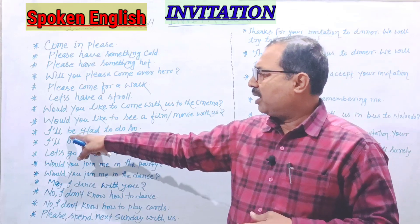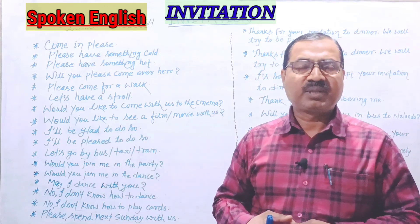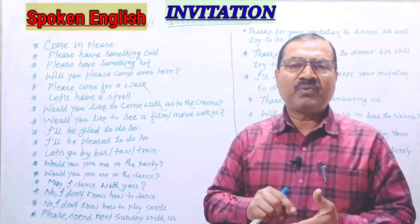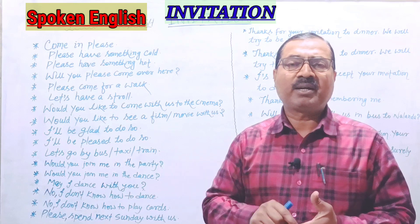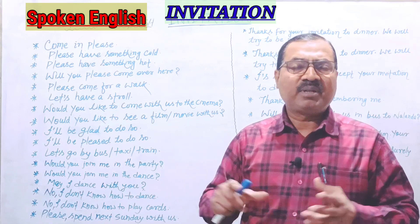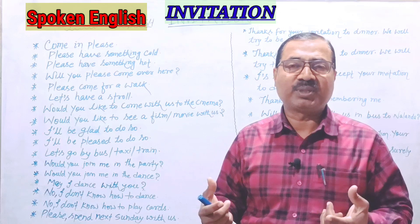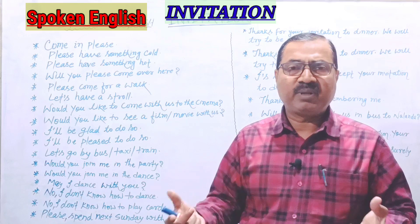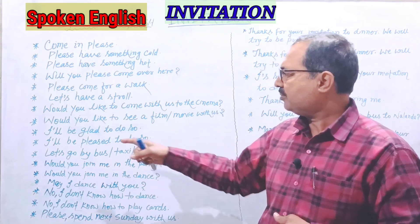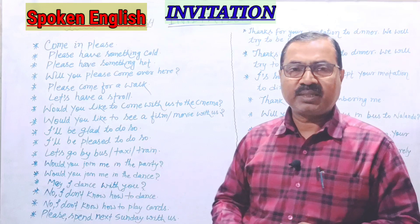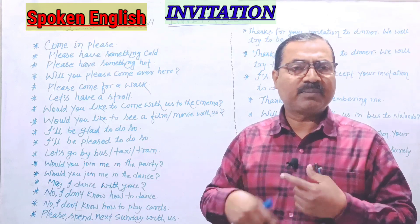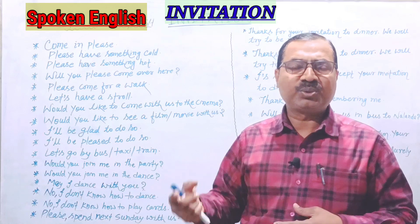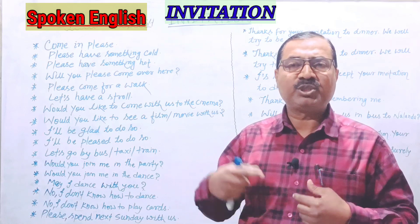उसके बाद है: I'll be glad to do so. I will का contraction form है I'll. I'll be glad to do so — मुझे ऐसा करने में खुशी होगी. अगर हम invitation को स्वीकार कर लेते हैं तो हम कहेंगे: I'll be glad to do so. Glad के जगह पर हम pleased use कर सकते हैं: I'll be pleased to do so.